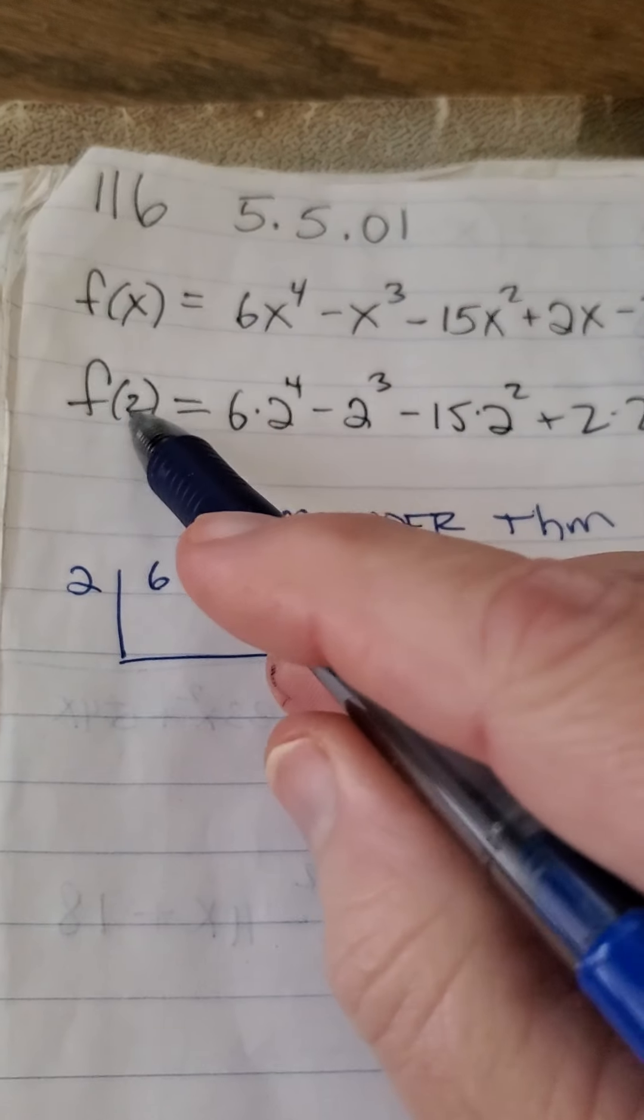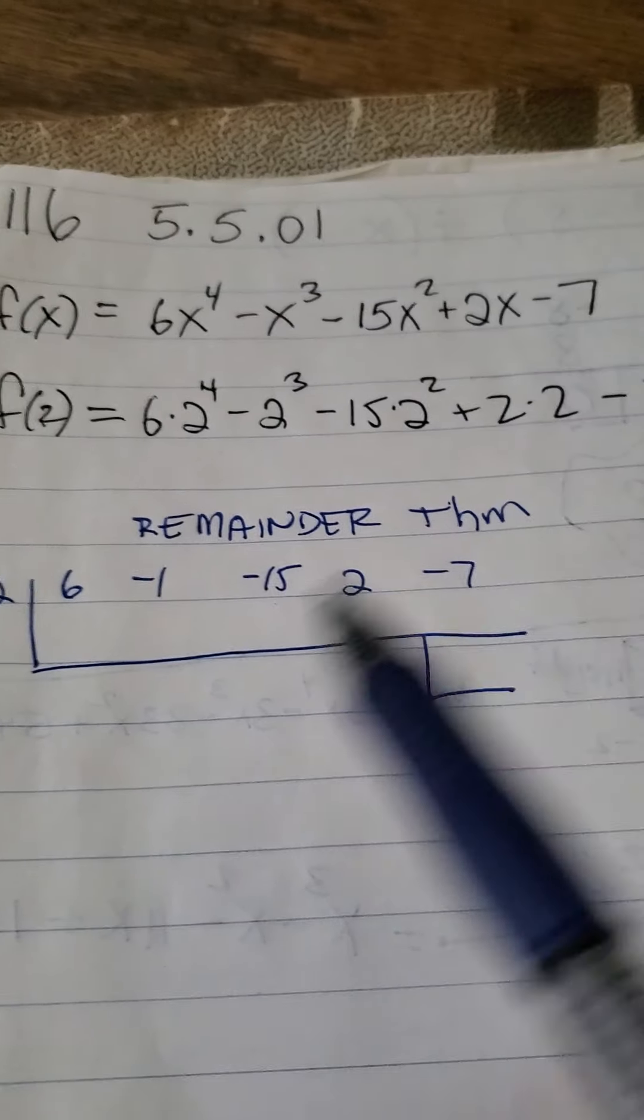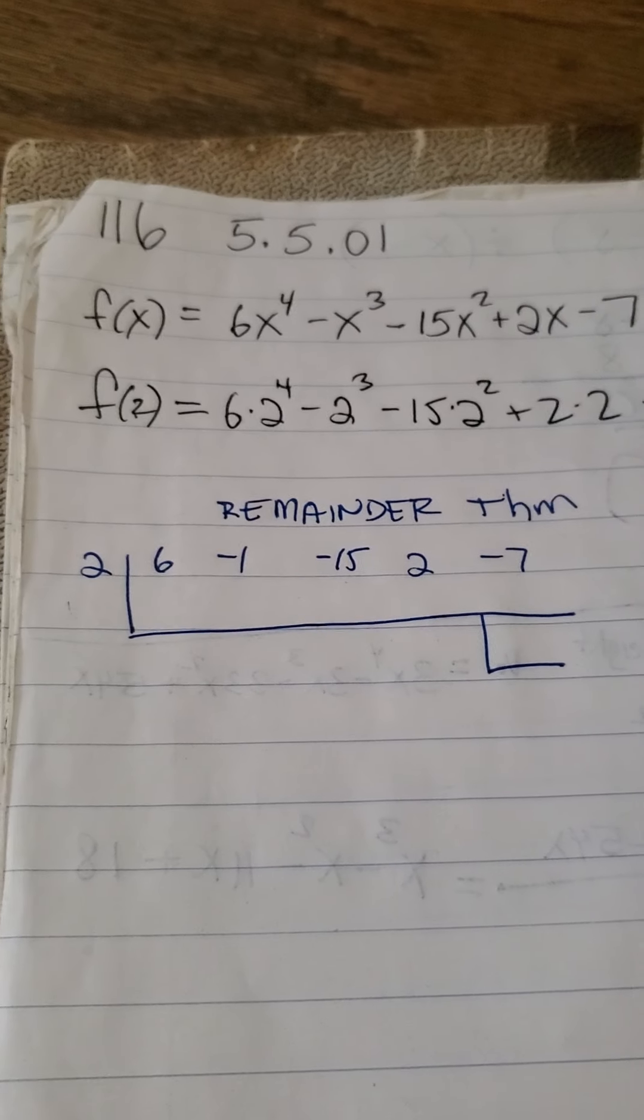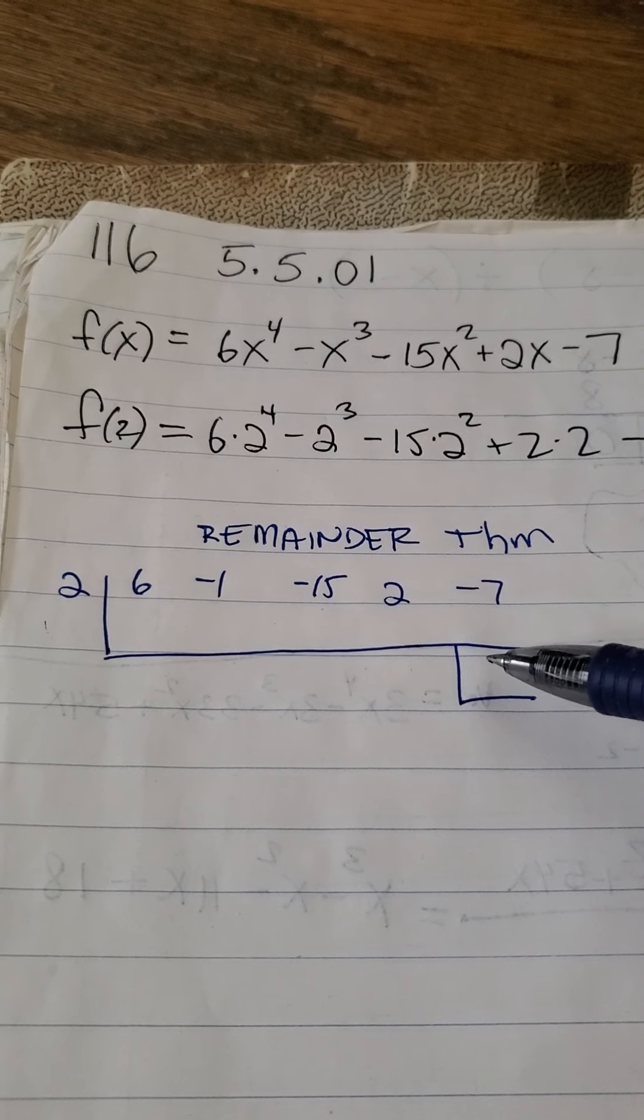The remainder theorem says take that number right there and stick it on the outside, then take all the coefficients, put them over here, and do the synthetic division. Whatever number you get in that remainder, that would be the answer.